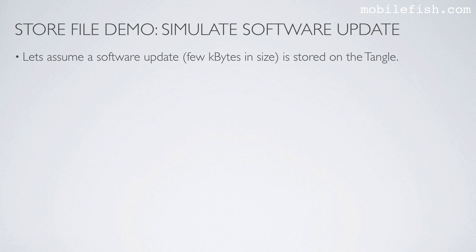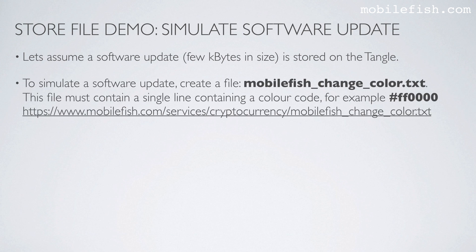I will now demonstrate another use case. Let's assume a software update, a few kilobytes in size, is stored on the Tangle. To simulate a software update, create a file named mobilefish__change__color.txt. This file must contain a single line with a color code — for example, hash FF0000.